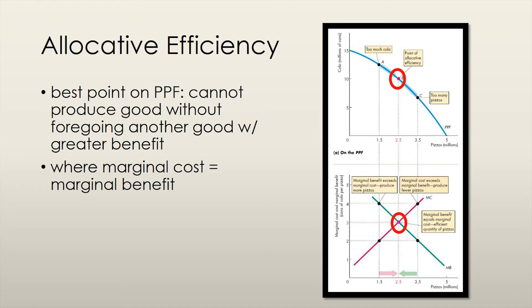The second point, where we produce 2.5 units of pizza, is the point at which we have achieved allocative efficiency. Marginal cost is equal to marginal benefit, thus we cannot produce more pizza without giving up cola, which we now value more.